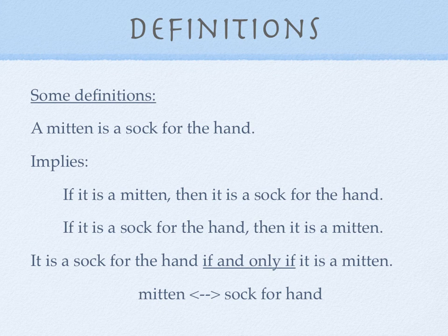And in if and only if form, it could be, it is a sock for the hand if and only if it is a mitten. Or mitten and then that double arrow, sock for hand. It doesn't matter which one you set up first in the definition, because it doesn't matter which direction you're going. You will conclude both directions.